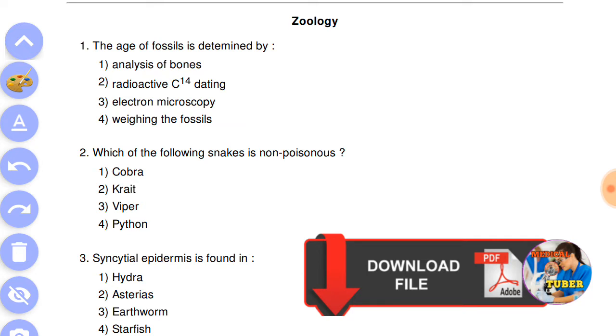Let's start now with the first questions of zoology. The age of fossils is determined by - answer is the second, radioactive carbon-14 dating.